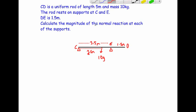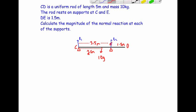We need to find the normal reactions at each support — R1 at C and R2 at E. Because the rod is in equilibrium, we know clockwise moments equal anticlockwise moments, and forces up equal forces down. Let's start by taking moments.